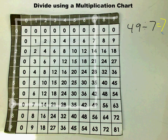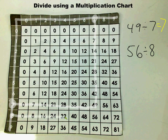Try another one. 56 divided by 8. 56 divided by 8. 8 is our divisor. So we're going to find 8 on our multiplication chart. You follow it over until you find 56. And then you follow it up until you find the other factor, which is 7. So 56 divided by 8 equals 7.